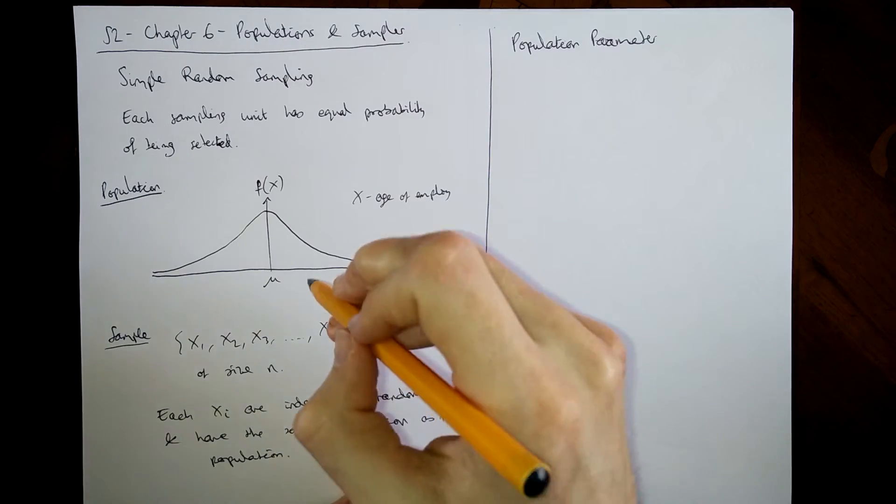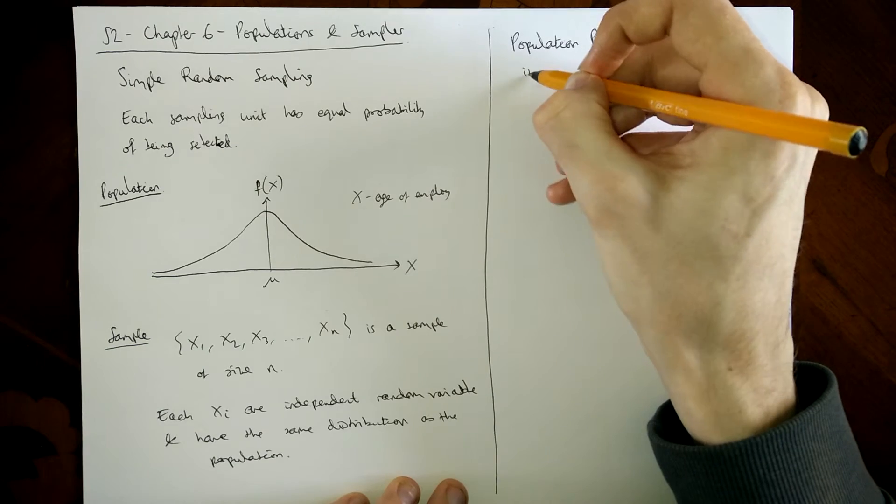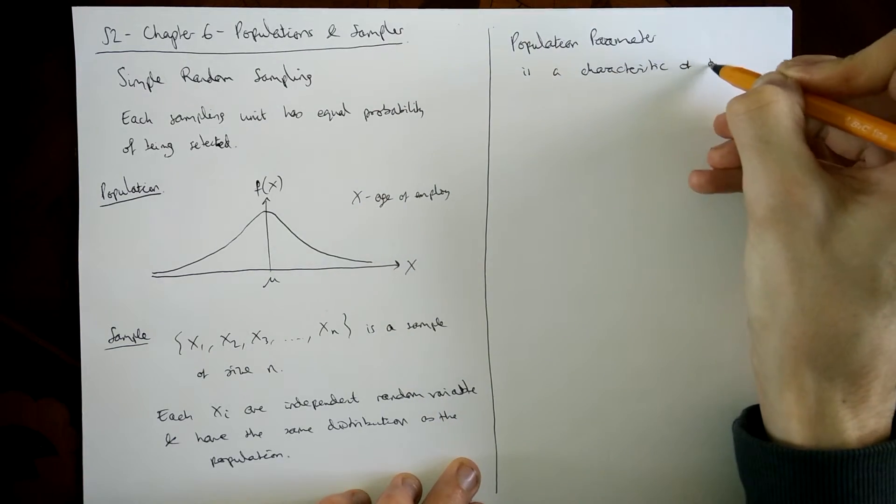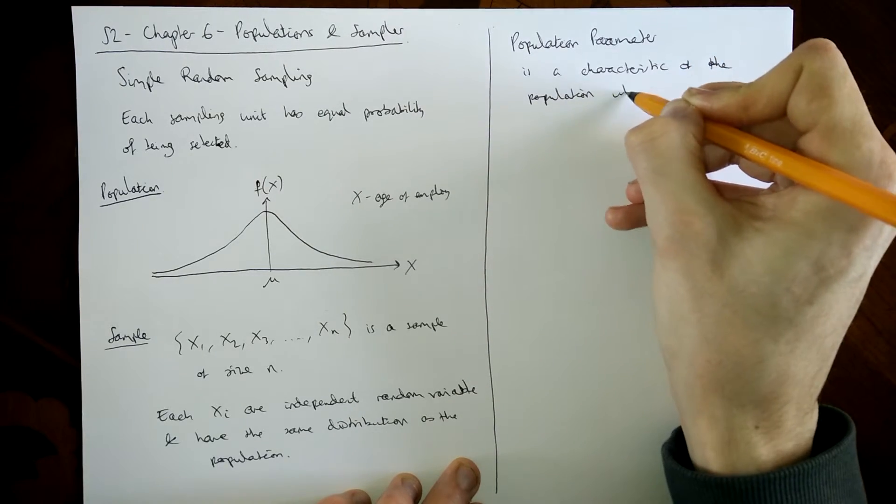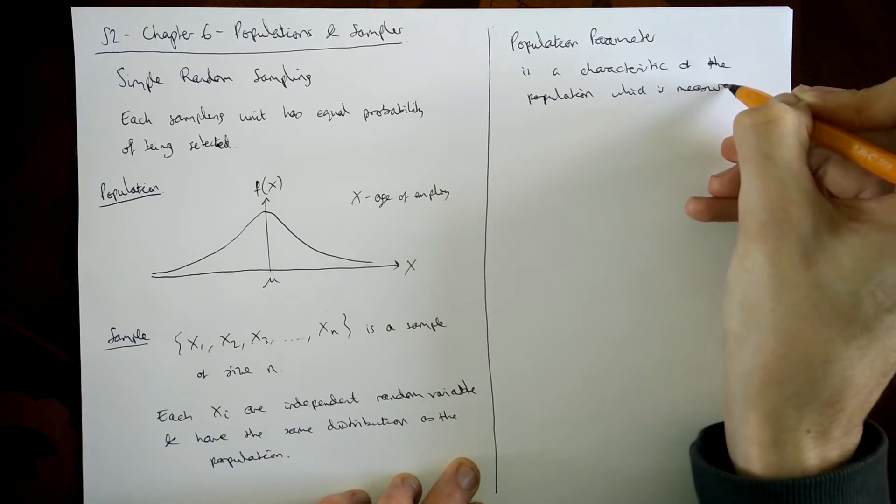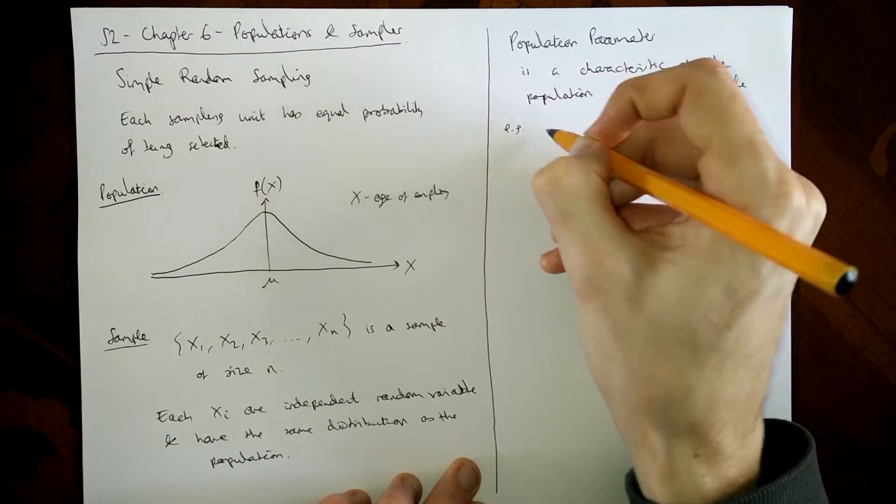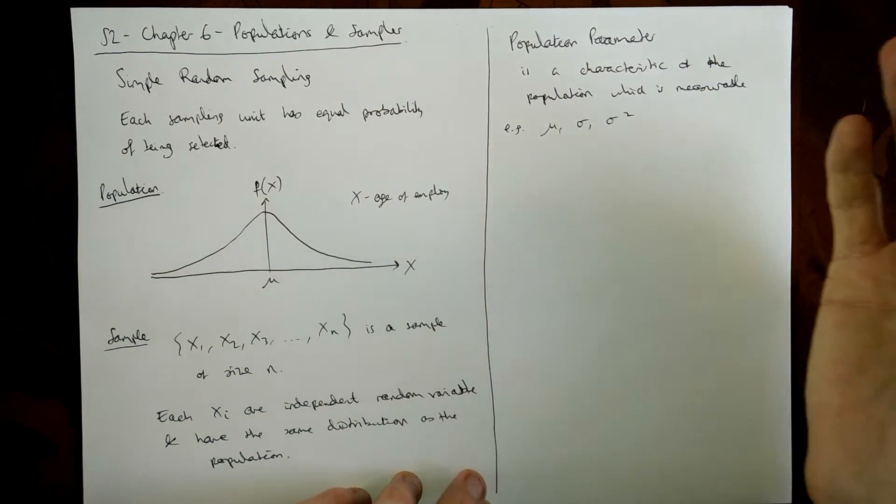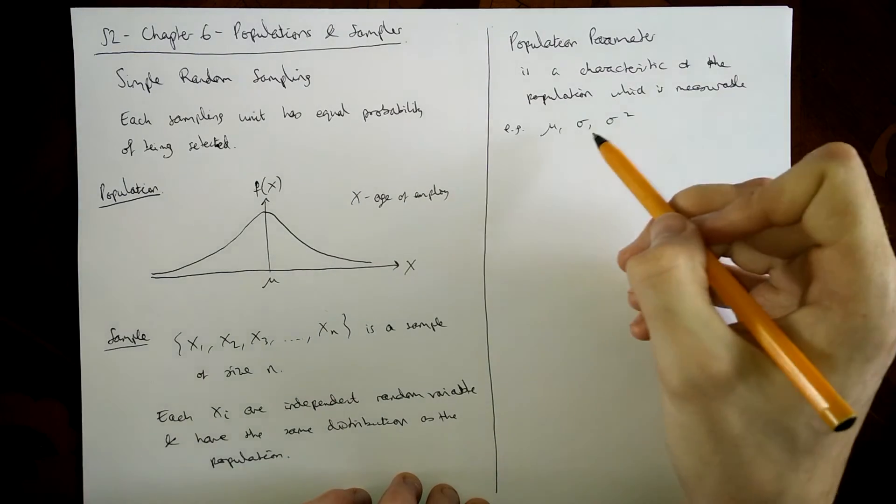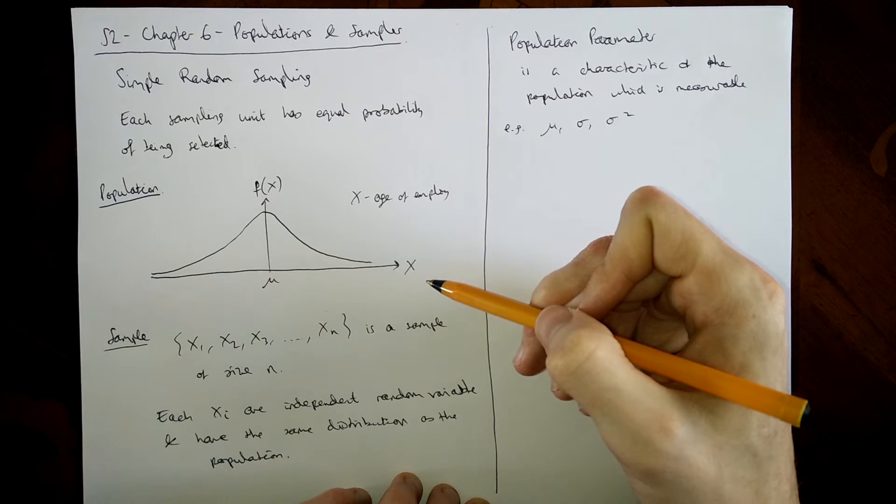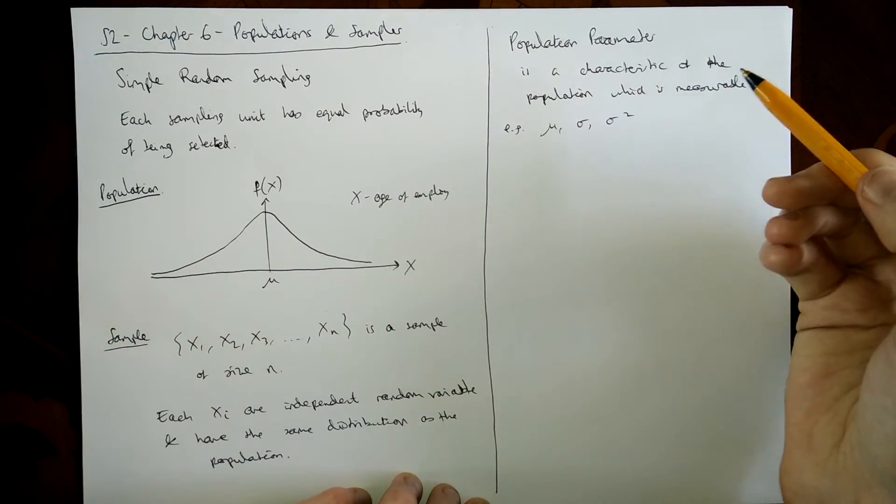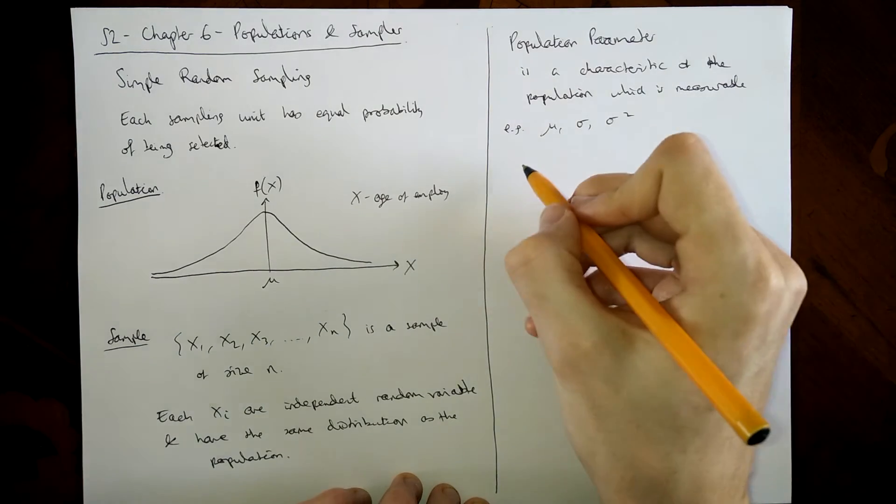So usually we take a sample because you're interested in finding something out about the population. That's what we mean by population parameters, a characteristic that we're interested in. So a characteristic of the population which you can measure. It's like a number. So often this could be like the mean or the standard deviation or the variance. They're the kind of things we're looking at normally in this S2 chapter. So for example here, we might want to know what the mean age of our population is, what the mean age of these employees is, or maybe what the standard deviation of the ages are or the variance of these ages are. That's the kind of thing we're looking for. These things can often be quite hard to calculate because the population could be very, very large. And therefore doing a census would be very time consuming. So instead we do a sample and hope that the sample we can use to sort of approximate or work out what the mean is.